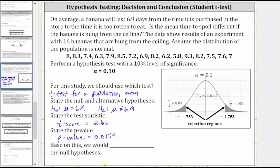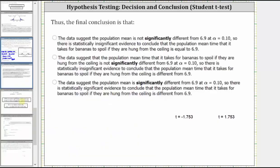So based upon this, we reject the null hypothesis. And for the last part, we want to state the final conclusion. Because we are rejecting the null hypothesis that mu equals 6.9, the data suggests the population mean is significantly different from 6.9 at alpha equals 0.10.